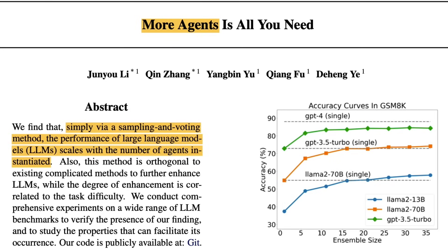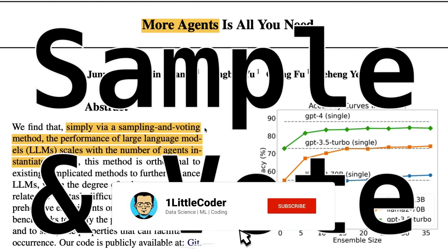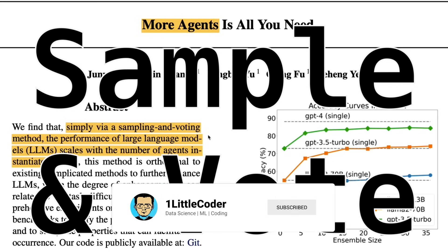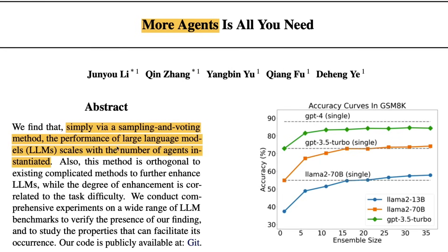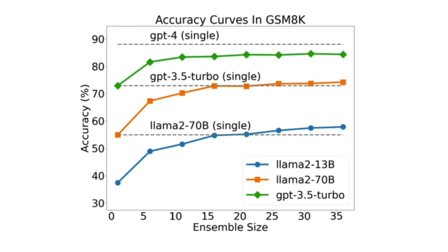This paper takes a very simple approach: sample and vote. You have 10 different models, and then you sample and vote. They show that the performance of large language models scales with the number of agents instantiated. For example, in their chart, when you have five models as the ensemble size, this is the accuracy, and when you have 10 or 35 models, accuracy keeps increasing.